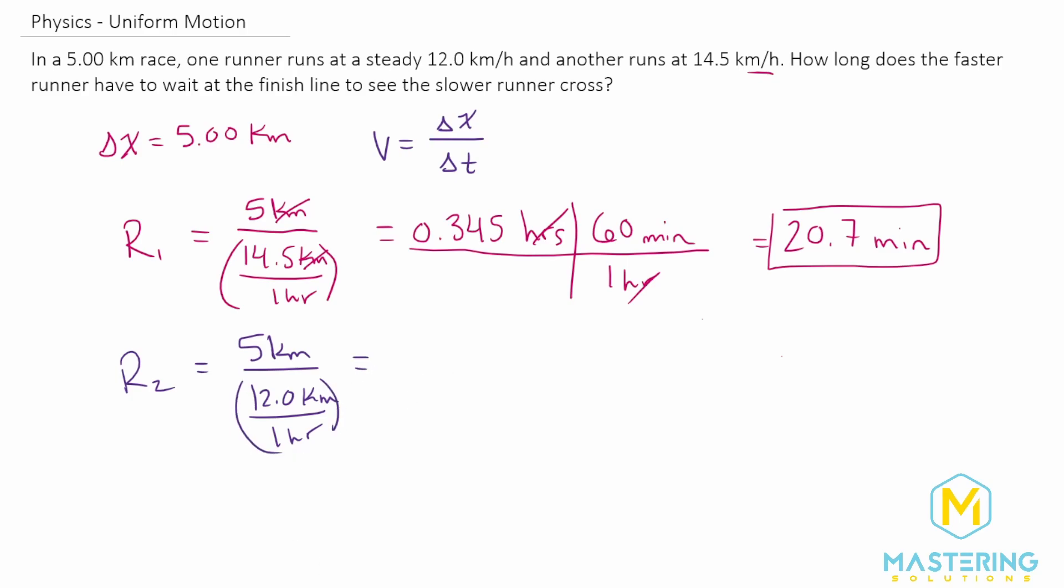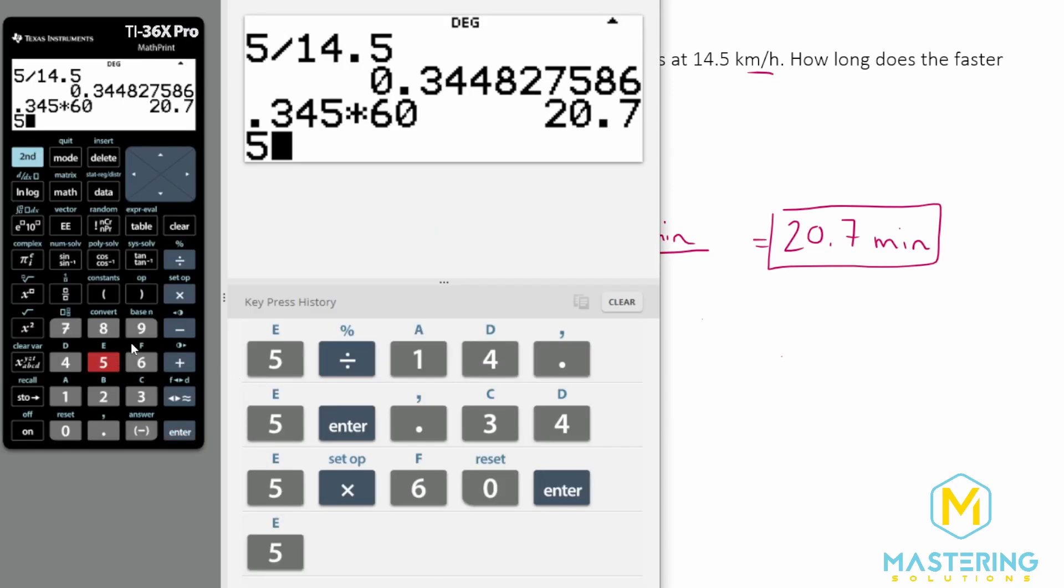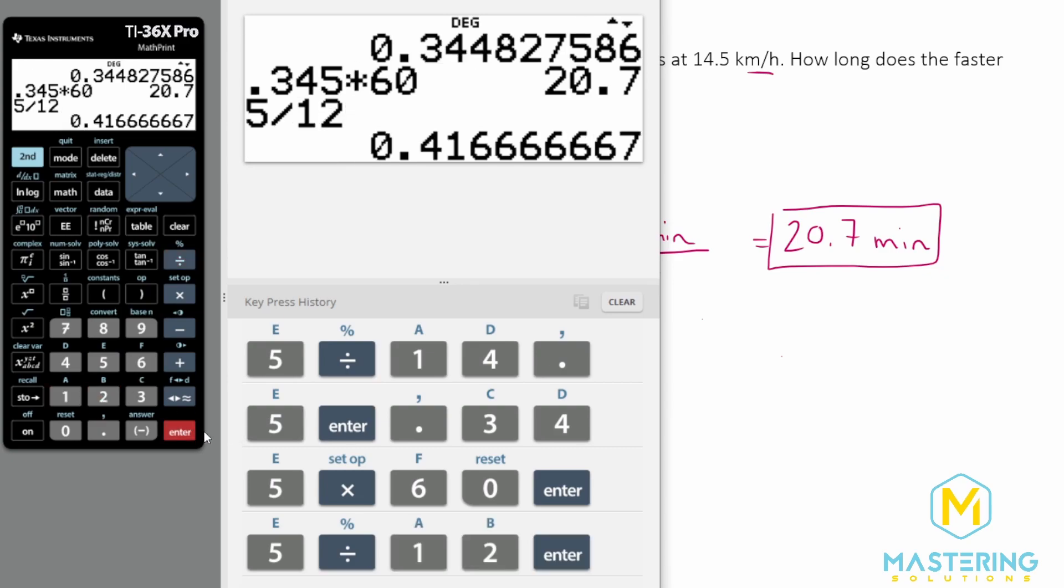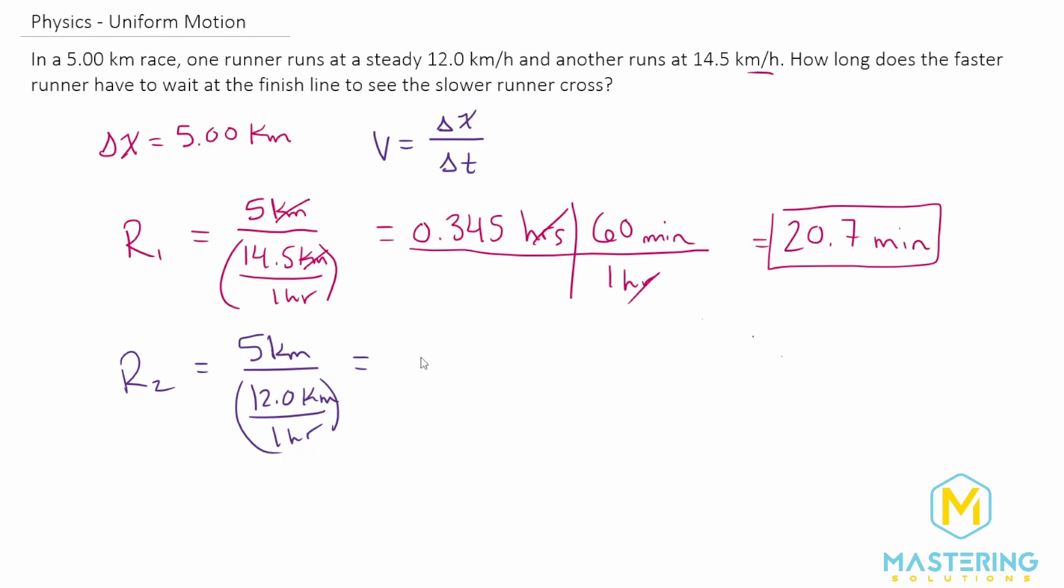So that gives us 5 divided by 12. That gives us 0.42. So 0.42 hours, same thing, we'll multiply that by 60 minutes.